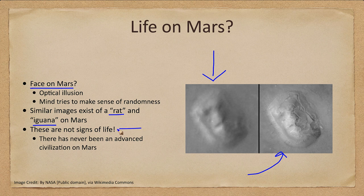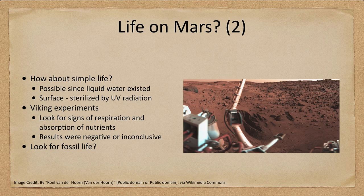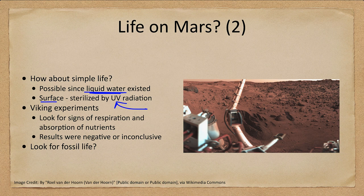To be clear, these are not signs of life. There has never been an advanced civilization on Mars — if there had been, we would have detected the remnants by now. However, that does not mean there is no life on Mars at all. The surface right now is sterilized by ultraviolet radiation from the sun. On Earth, UV radiation is blocked by the ozone layer, but Mars does not have an ozone layer, so it is constantly bombarded by UV radiation which sterilizes the surface.